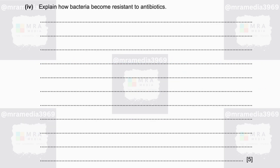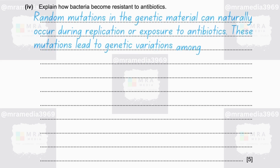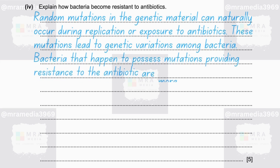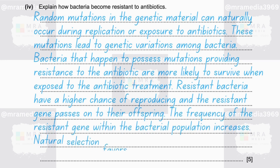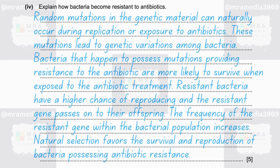Explain how bacteria become resistant to antibiotics. Within a population of bacteria, random mutations in the genetic material can naturally occur during replication or due to exposure to various environmental factors, including exposure to antibiotics. These mutations lead to genetic variations among bacteria. Bacteria that happen to possess mutations providing resistance to the antibiotic are more likely to survive when exposed to antibiotic treatment. As a result, they have a higher chance of reproducing compared to non-resistant strains. Through reproduction, the bacteria carrying the resistant gene or allele pass on this advantageous trait to their offspring.